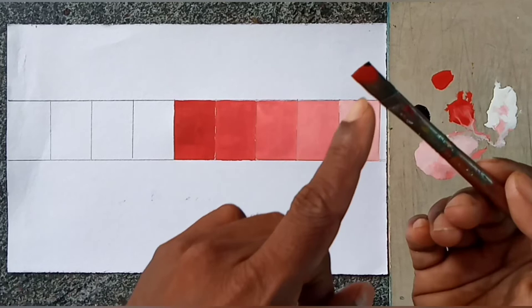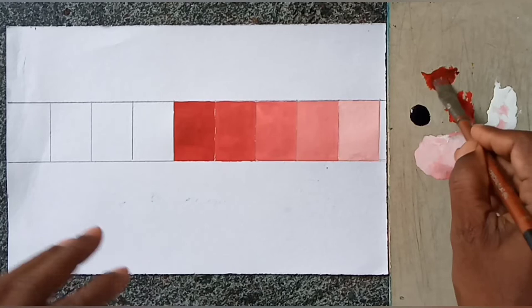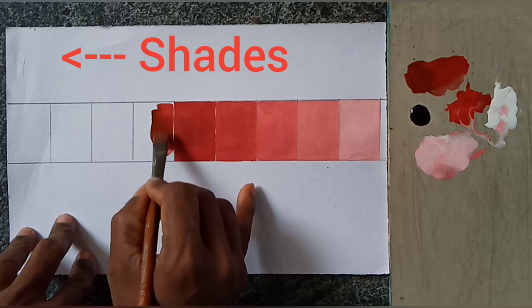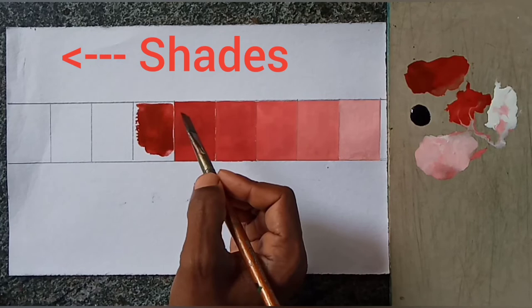Now want to make shade effect. Shade effect means you want to add black color with red. So little bit black want to take. It will come dark red. Shade slowly. After complete.